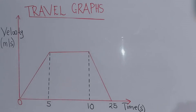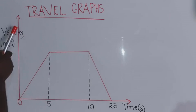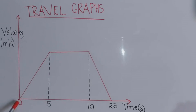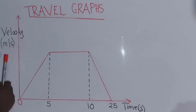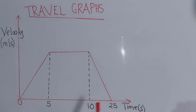On the velocity-time graph, in the vertical axis you are going to find the velocity, which will be measured in meters per second. Then in the horizontal axis you are going to have the time, and this time will be measured in seconds.